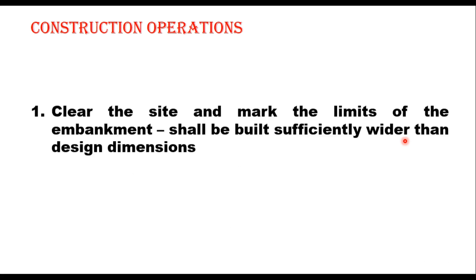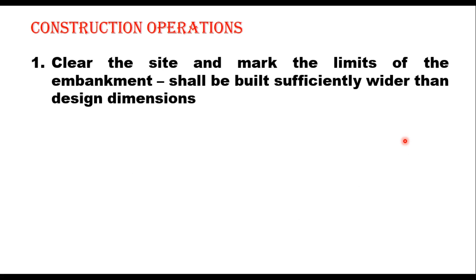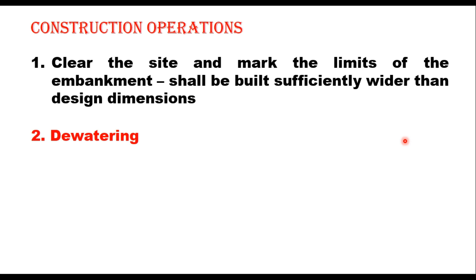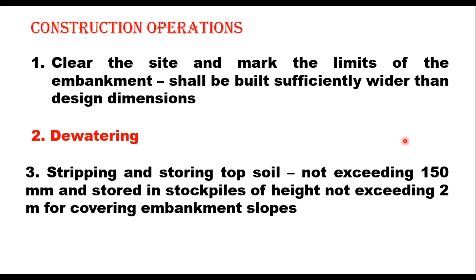In construction operations, the first step is to clear the site and mark the limits of the embankment, which shall be built sufficiently wider than the design dimensions. The second step is dewatering: if the foundation of the embankment is in an area with stagnant water and it is feasible to remove it, it should be removed. If the embankment is constructed under water, only acceptable granular materials or rock shall be used — well graded gravel, well graded sand, poorly graded gravel or poorly graded sand — and these materials should be non-plastic having uniformity coefficient not less than 10. The third step is stripping and storing topsoil, which should not exceed 150 mm and should be stored in stockpiles of height not exceeding 2 m for covering embankment slopes.